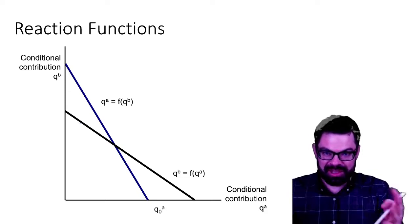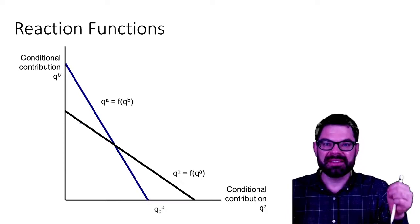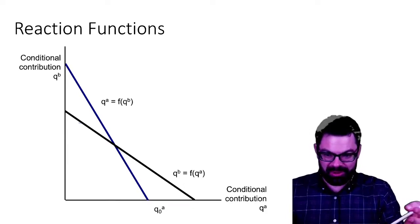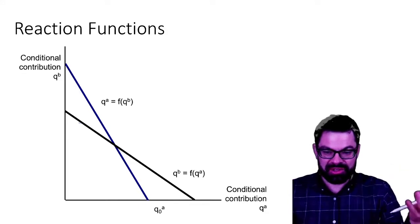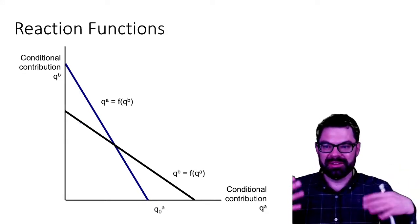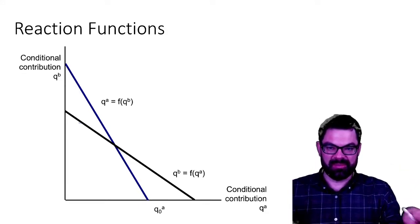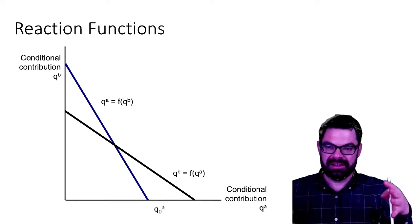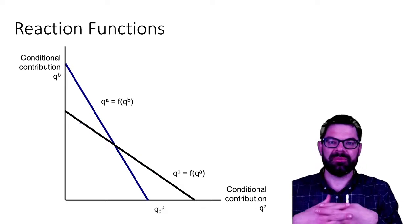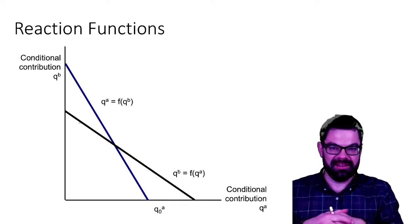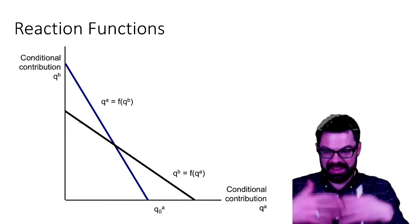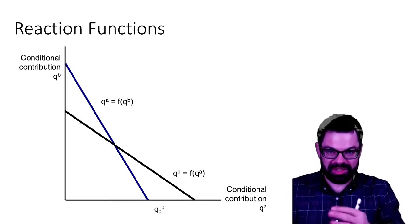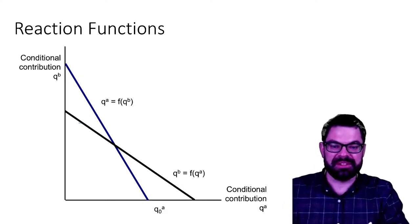Nash won the Nobel Prize for showing that even with a large number of players who all decide simultaneously, it is possible and actually very likely to have an equilibrium such as the one we find here — though he showed this much more generally than in this very simple example.